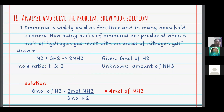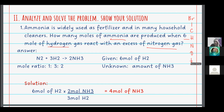According to the problem, we have ammonia which is used as fertilizer and in many household cleaners, and we need to find how many moles of ammonia will be produced if you have 6 moles of hydrogen gas reacting with nitrogen gas. For the chemical equation, the reactants are nitrogen and hydrogen. Remember that nitrogen is a diatomic molecule — they don't exist as one atom in nature but come in pairs.